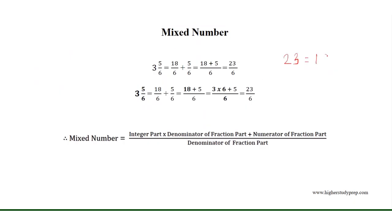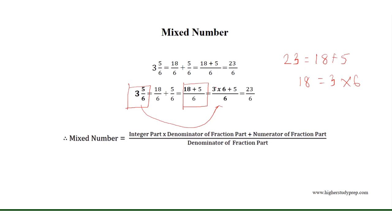23 is equal to 18 plus 5. Therefore, 3 and 5 over 6 is equal to (18 plus 5) over 6, where 18 is equal to 3 times 6. Therefore, we can see that the mixed number 3 and 5 over 6 is equal to a fraction whose numerator equals 3 times 6 plus 5, and whose denominator is 6. So, any mixed number is equal to a fraction where the numerator equals the integer part times the denominator of the fraction part, plus the numerator of the fraction part.